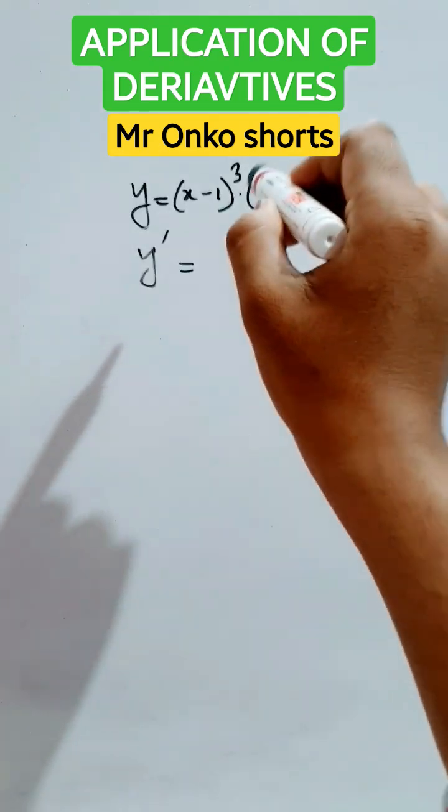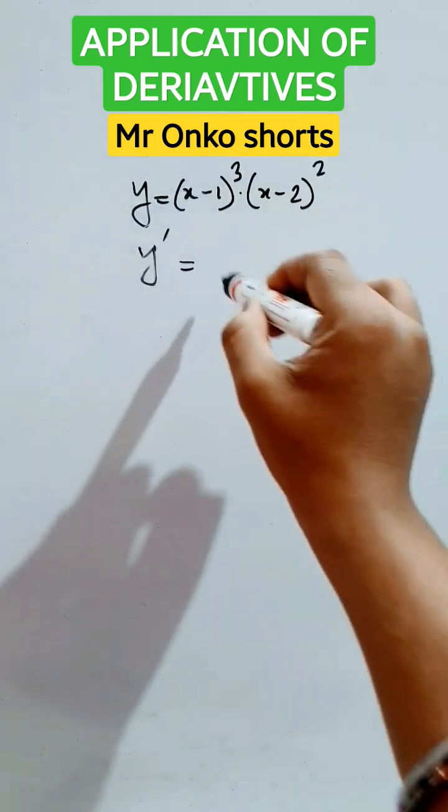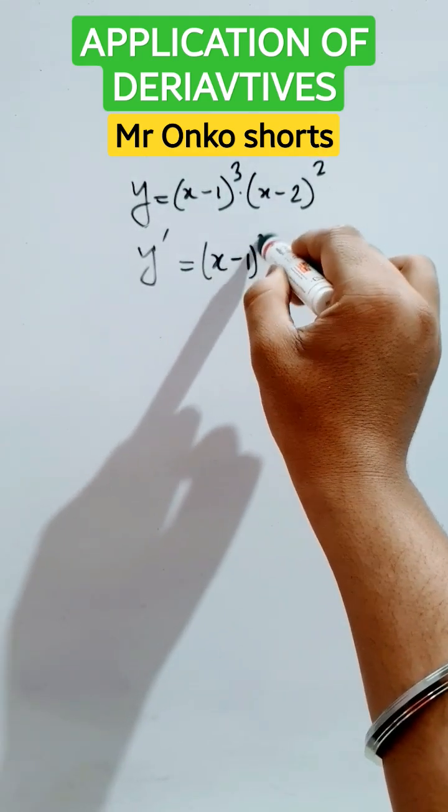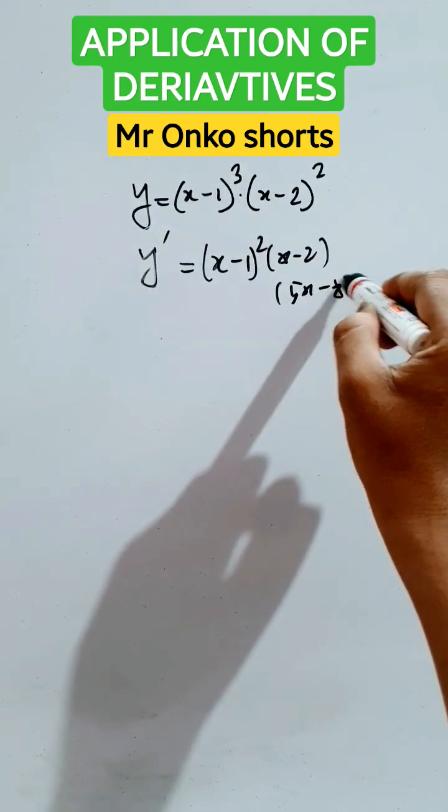We have to take the first derivative to find the increasing interval for the given function. So it will be (x-1)² times (x-2) times (5x-8).